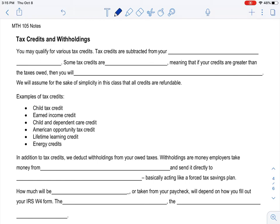Alright, let's get to how we determine if we're going to get a refund, which is always so fun, even though it means it was your money the whole time, but still feels good, or if you're going to have to owe. So tax credits and withholdings. You may qualify for various tax credits. Tax credits are subtracted from your owed taxes directly.